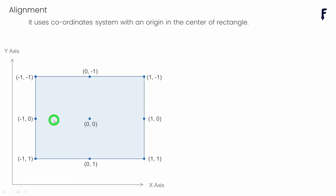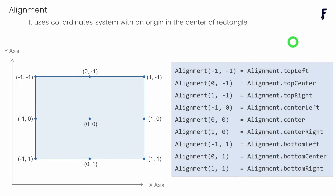As we go to the left side, the value of the x axis decreases, and on the right side it increases. On the top, the value of y decreases, and as we come down, y increases. So the values for x and y must be in the range of minus 1 to 1. In fact, the nine constants of the alignment object are made using these specific values, as shown in the table here.